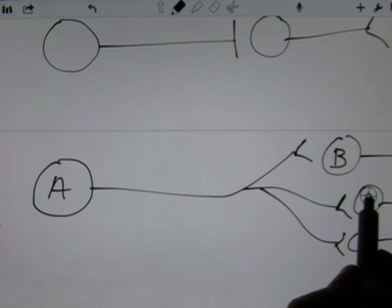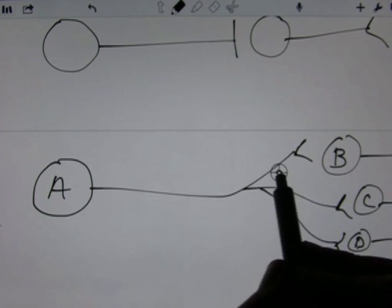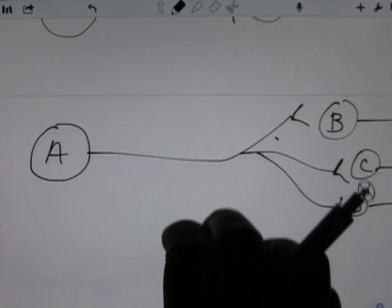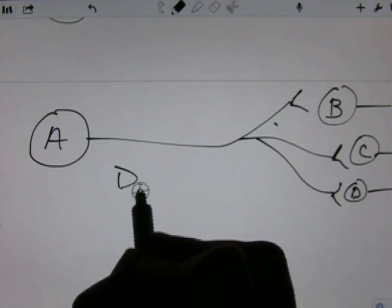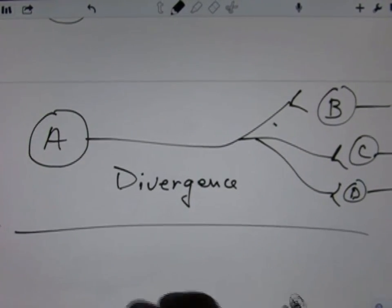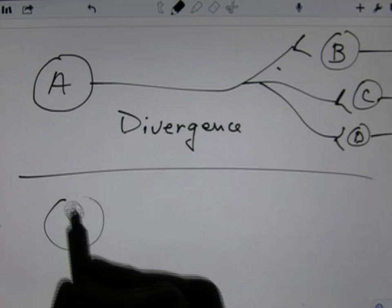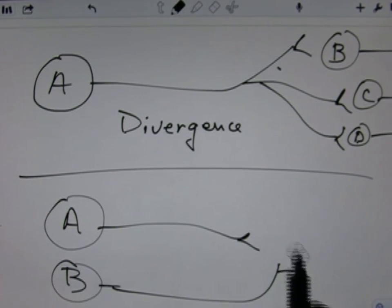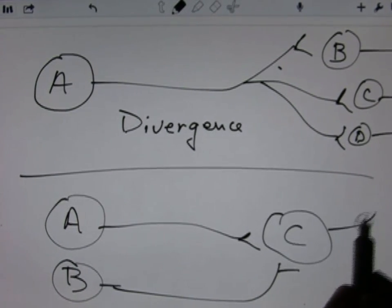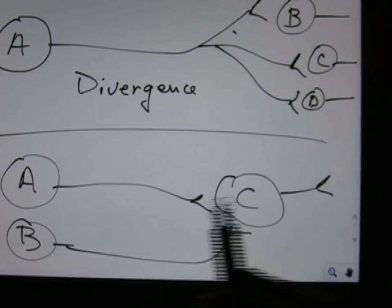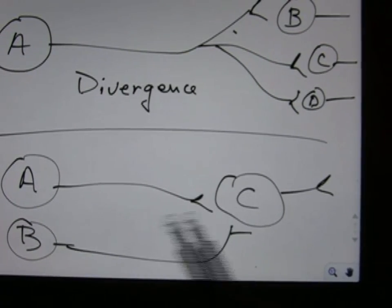Divergence, in this case from A to B, C, and D, so an action potential would go to all of them and potentially start a new action potential in each of B, C, and D. That's divergence. We have also convergence. And with convergence, you have the possibility of having an action happen only if both inputs or if either input.